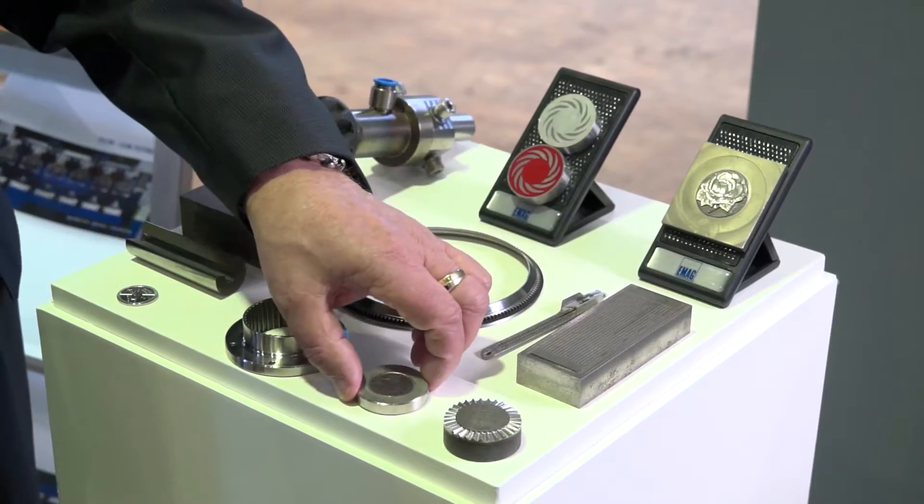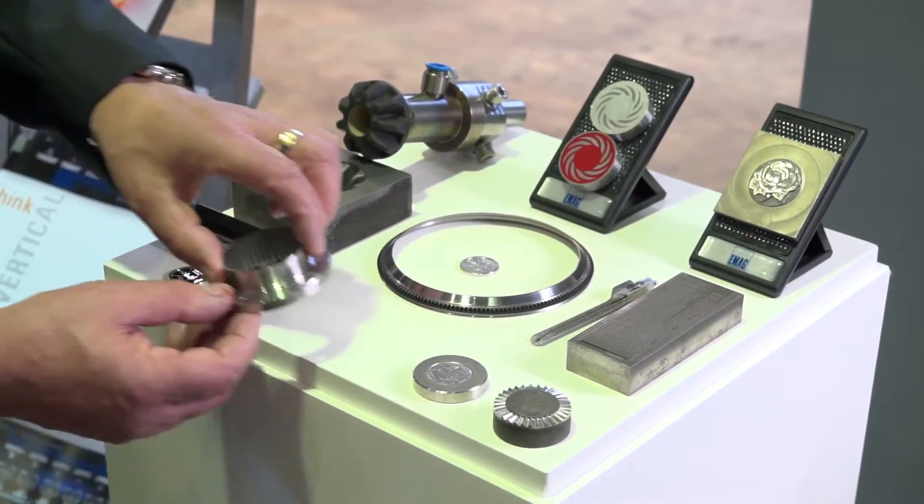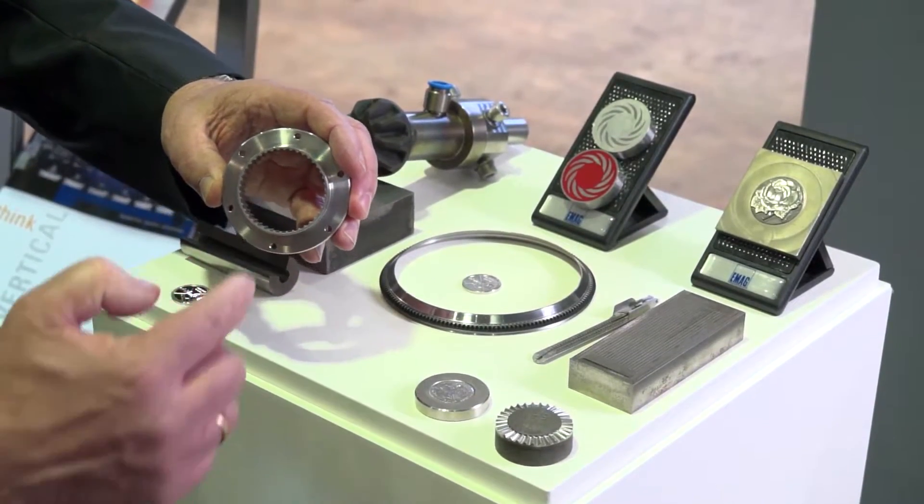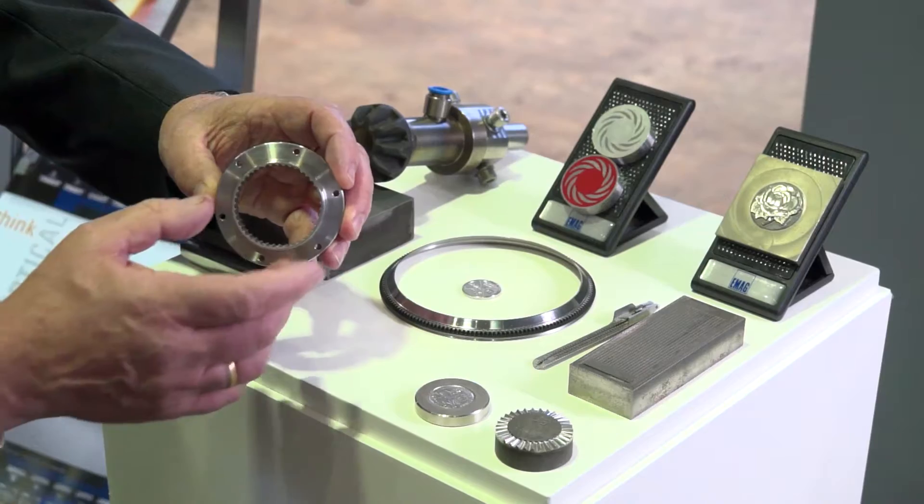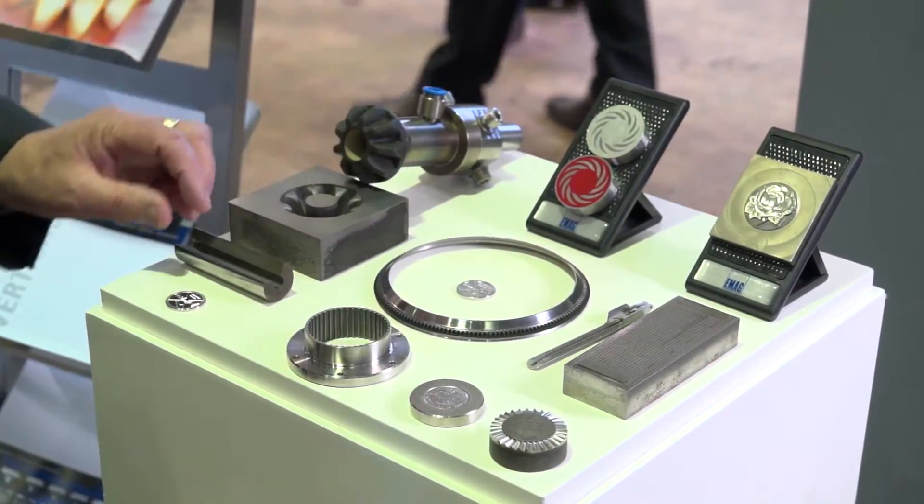This is a punch for the coining production and here we have a special part in the automotive industry where we replace the broaching process with ECM broaching in the hard stage, very thin walls without any kind of burrs and stress.